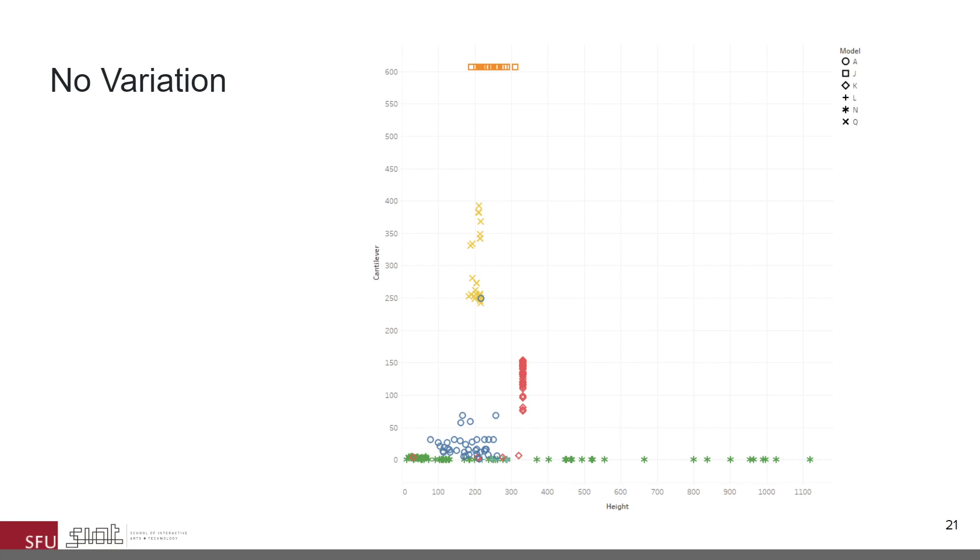Third, this figure shows a scatter plot of the cantilever area versus the height of alternatives. This visualization helped us discover that alternatives generated by model K do not vary in height, while those generated by model J do not vary in cantilever area, contrary to what the designers intended, and this flagged a problem in both models.